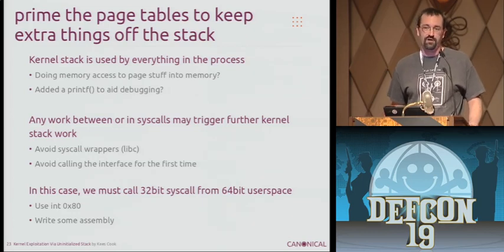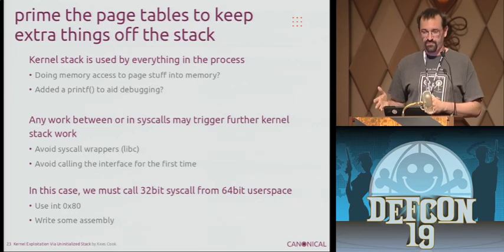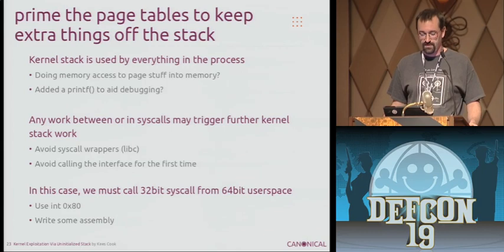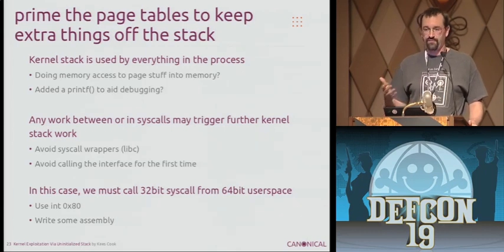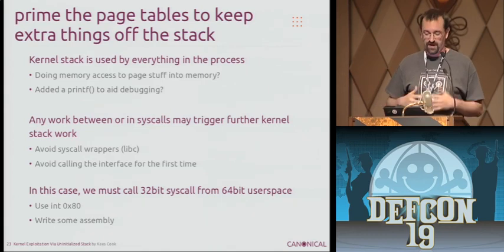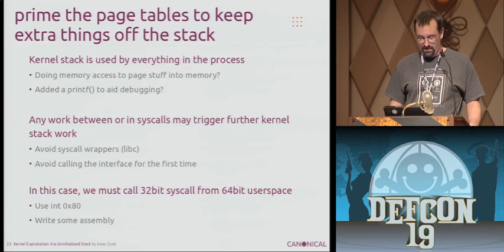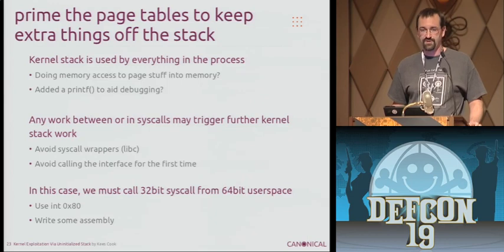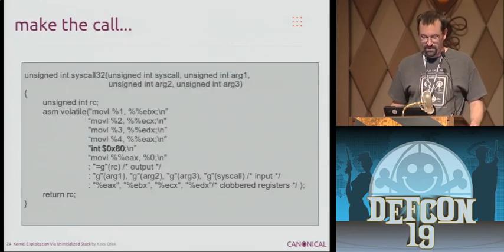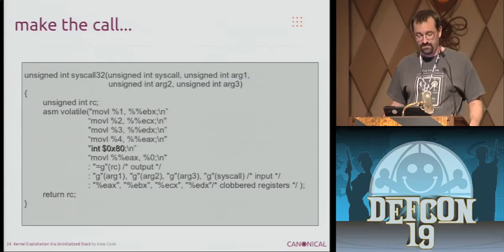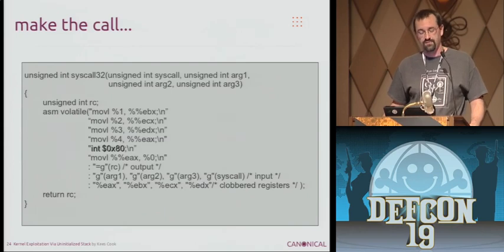Additionally, the kernel may go off and do other work between the two on behalf of your process if it's a new code path. The solution for that was just to call the ioctl a whole bunch of times in a row first, so it finished any work it had to do with page tables and got everything in line for you to then call the final one. Another small challenge is these are all compat syscalls — they're 32-bit, but we're actually attacking a 64-bit host. So we have to call a 32-bit syscall from a 64-bit executable, which is just some more assembly. Basically int 80 will force a 32-bit syscall — this is a quick C wrapper to shove the arguments into a 32-bit syscall.